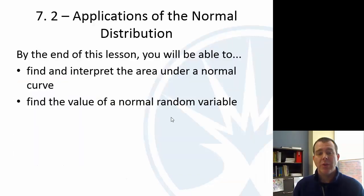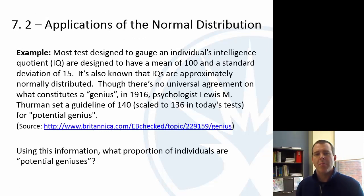All right, section 7.2. Now we're going to actually learn how the normal distribution is used. So we're going to find and interpret area under a normal curve, not just Z, and then we're also going to find the value of a normal random variable. So those are the two targets here. So we're going to start with an example.